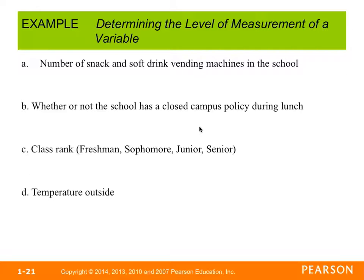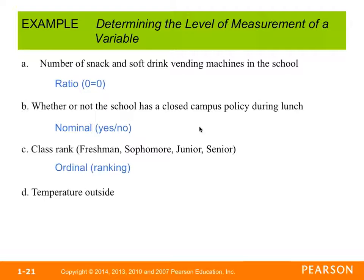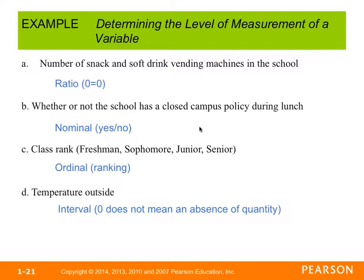Let's look at examples. Number of snack and soft drink vending machines at school is ratio — if you have zero machines, that means you have none, so zero equals zero. Whether a school has a closed campus policy during lunch is nominal — it's a yes or no question with no order. Class rank — freshman, sophomore, junior, senior — is ordinal because there's a definite order. Temperature outside is interval — a temperature of zero doesn't mean there's no temperature, it means the temperature is actually zero degrees, so zero does not indicate an absence of quantity.